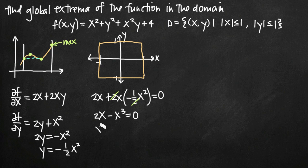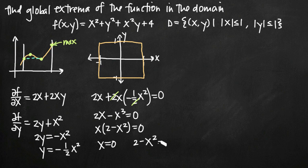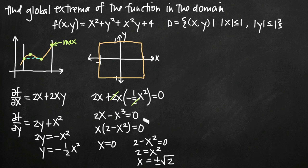Factoring out x, I get x times (2 minus x squared) equals zero. Setting both factors equal to zero gives x equals zero, and from 2 minus x squared equals zero, x equals positive or negative square root of 2. However, positive and negative square root of 2 do not lie within the domain — they don't satisfy absolute value of x less than or equal to 1 — so those are values I don't need to consider. x equals zero is the only value I'm interested in.